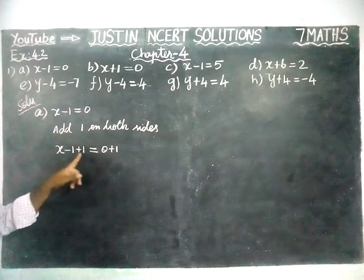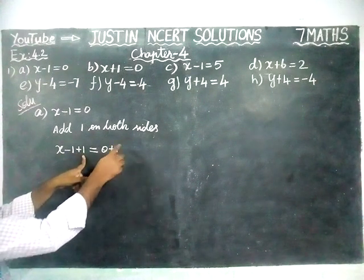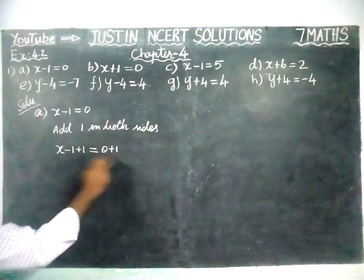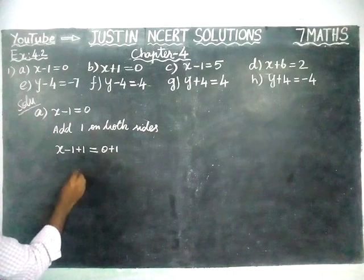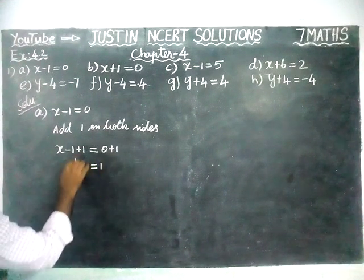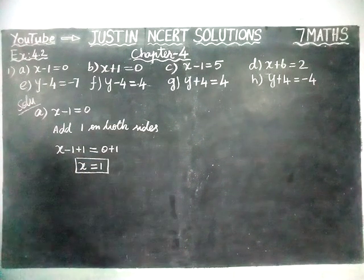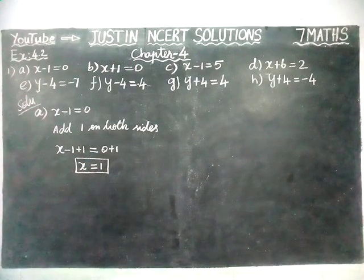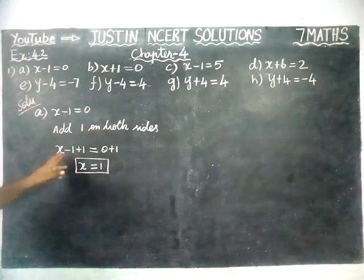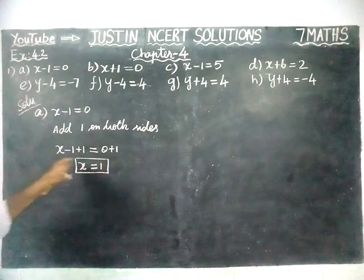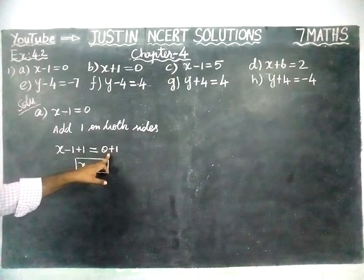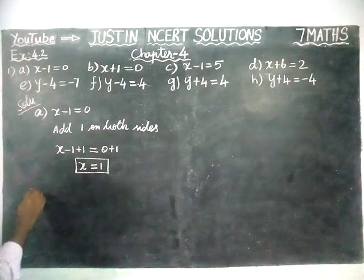Left hand side we added 1, the same thing to balance the equation we are adding 1 on the right hand side also. Now this is balanced — left hand side is equal to right hand side. Plus 1 minus 1 gets cancelled, so x is equal to 0 plus 1 equal to 1. By using the solving equation method we added 1 on both sides, both sides are balanced, so x equal to 1.